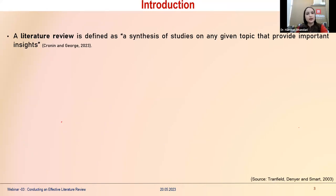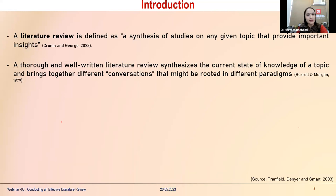A literature review is basically a summary of studies on any given topic that provides important insights. It is referred to as a thorough and well-written review which synthesizes the current state of knowledge, giving you a summary of the entire state of knowledge available on the research topic, and it brings together different conversations.